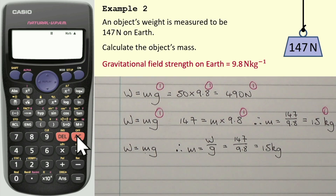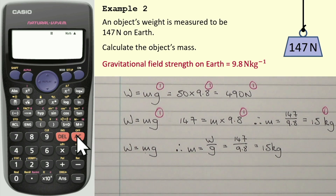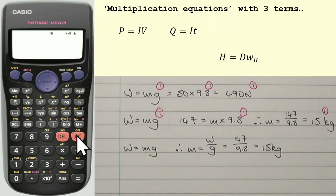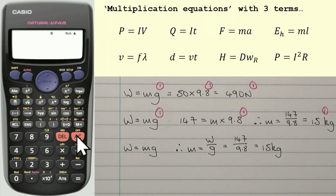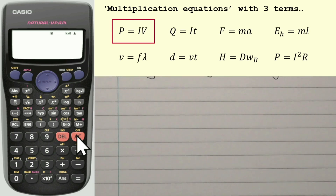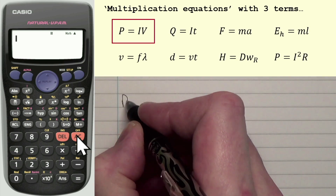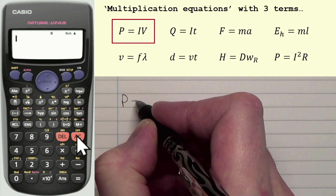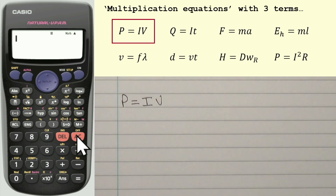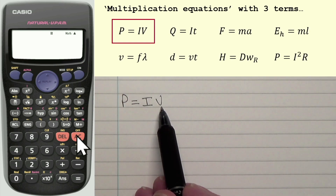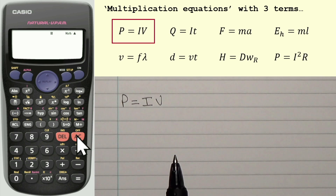This is an equation with three terms — one term on the left-hand side, two terms multiplied on the right-hand side. Here are some similar equations. We'll start with P equals I times V. If you're working at P, which is actually power, then you wouldn't need to rearrange this equation at all. It would just be P equals current I multiplied by voltage V.